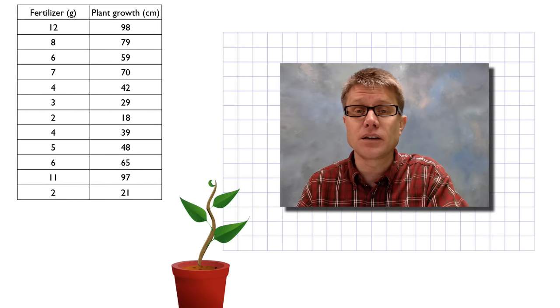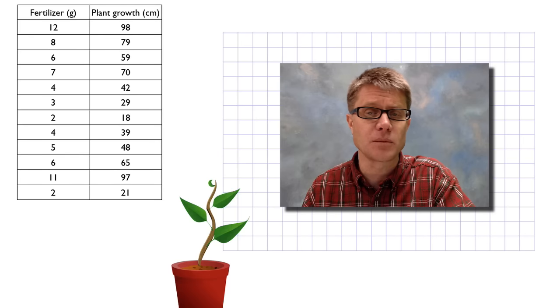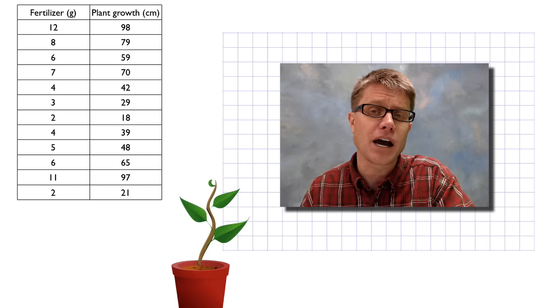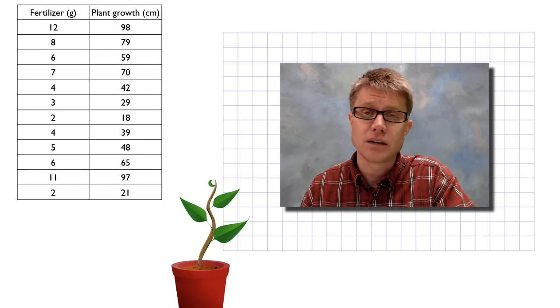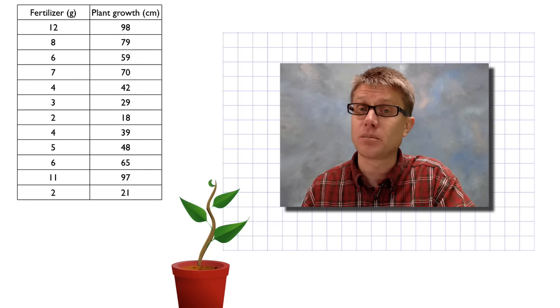Let's say I give you the following data. Let's say I do a lab where I vary the amount of fertilizer that I'm giving plants and then I measure how high those plants grow. The independent variable in this case is going to be the fertilizer, and the dependent variable is going to be the growth of the plants.